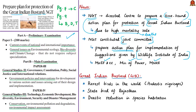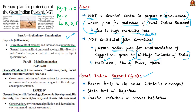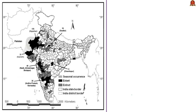Now let us look at the Great Indian Bustard — the threats faced by the bird and the suggestions given by the Wildlife Institute of India. The Great Indian Bustard is one of the rarest birds in the world. Its scientific name is Ardeotis nigriceps and it is the state bird of Rajasthan. Historically, the Great Indian Bustard was distributed throughout the western half of India.